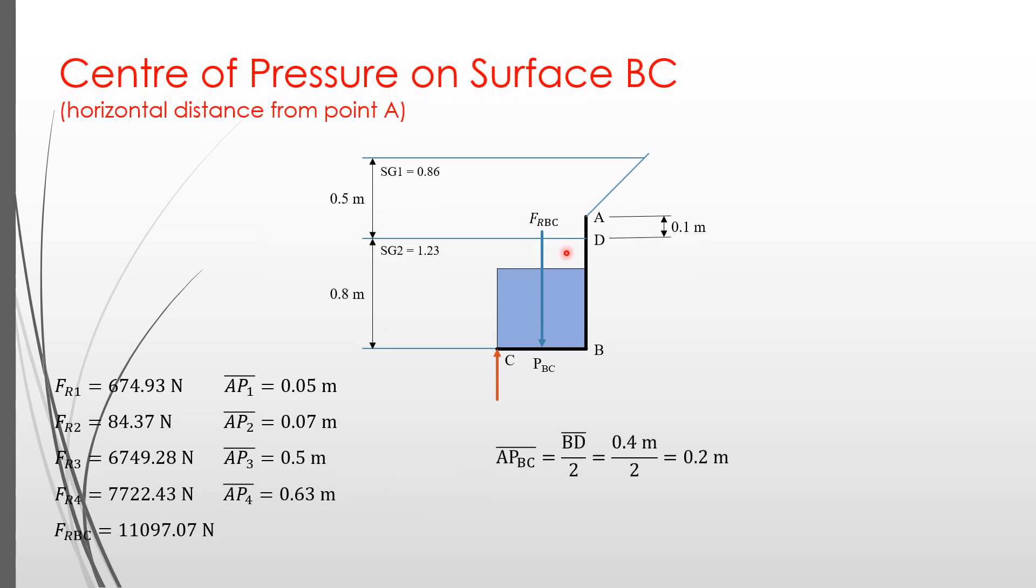Now, we need the perpendicular distance from A to the center of pressure of FRBC, which is PBC. It is a rectangle, thus it is in the middle of BC, or 0.2 meters from B. Hence, the horizontal distance from A to PBC is also 0.2 meters.